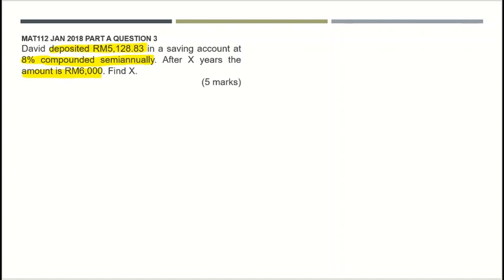The question asks: what is x? The word 'deposit' means it is the initial situation or the present value, so P equals 5,128.83. The interest rate is eight percent compounded semi-annually — compounded more than once a year — so the nominal rate k equals 0.08, and the conversion period m equals 2 because semi-annually means twice a year.